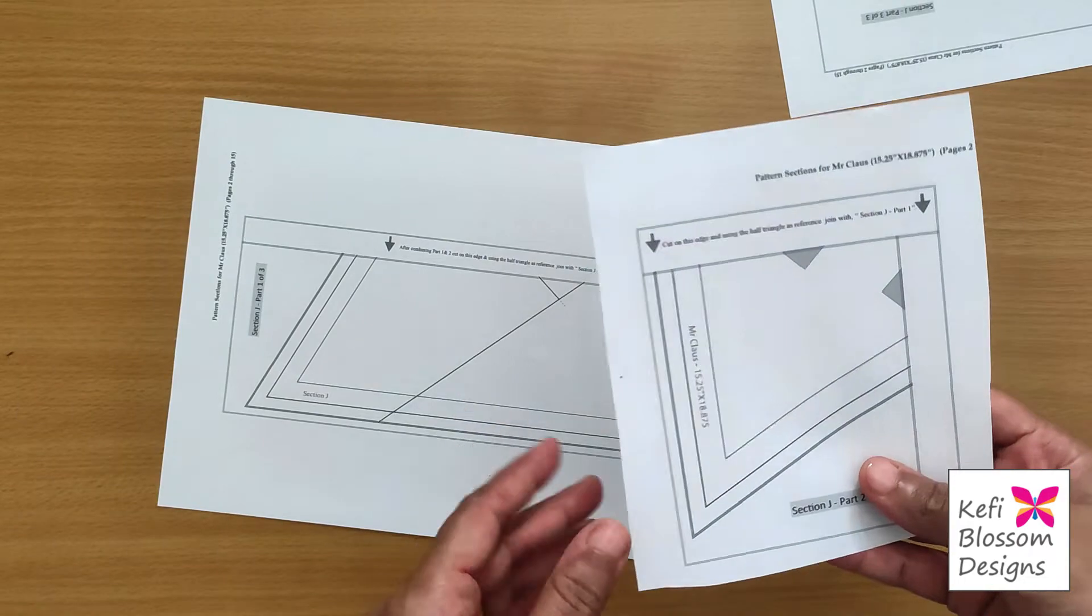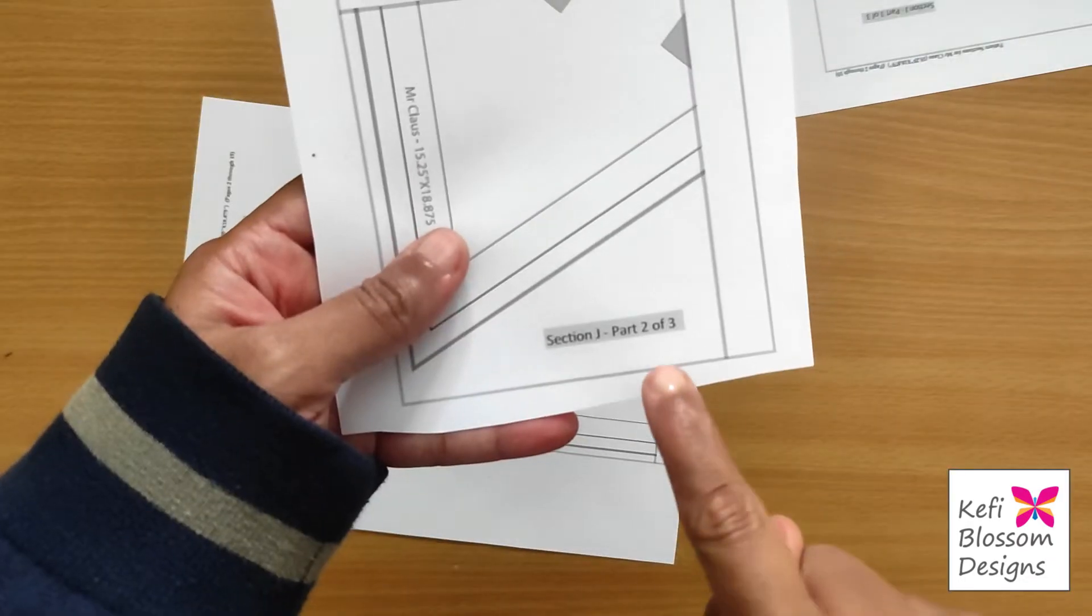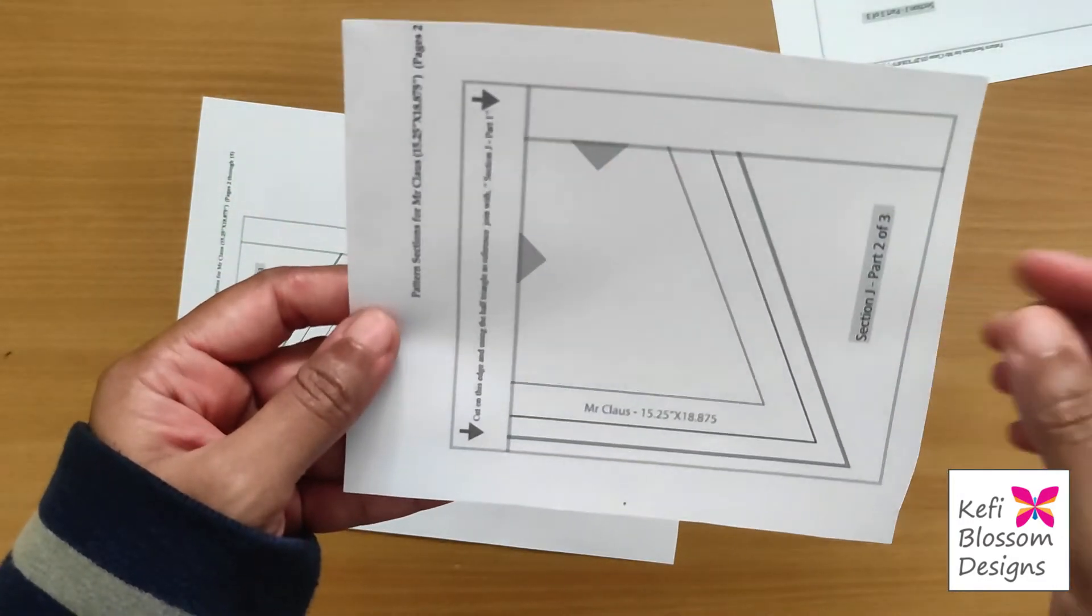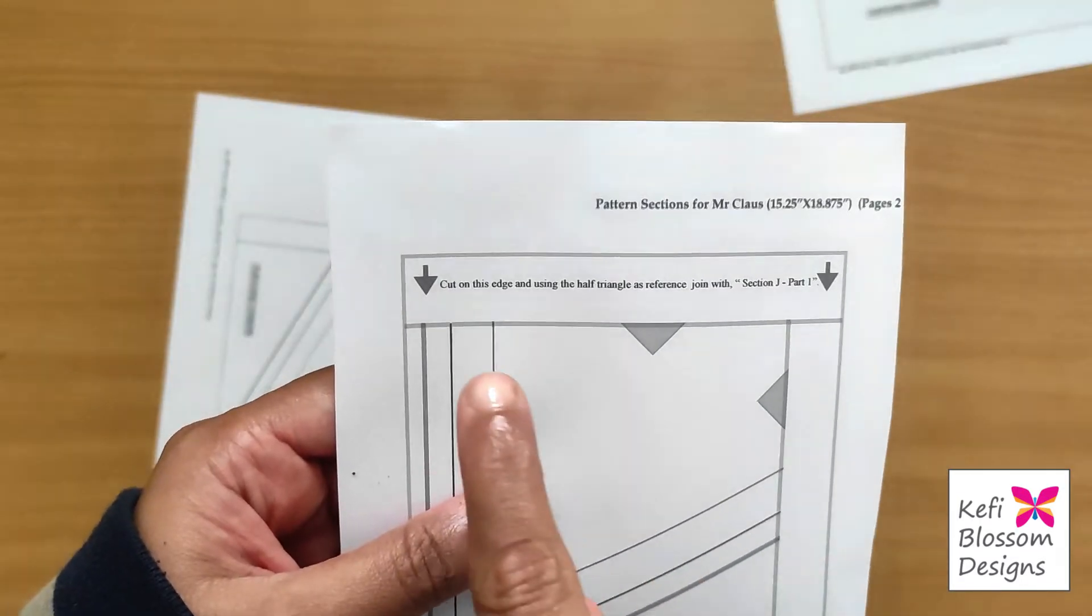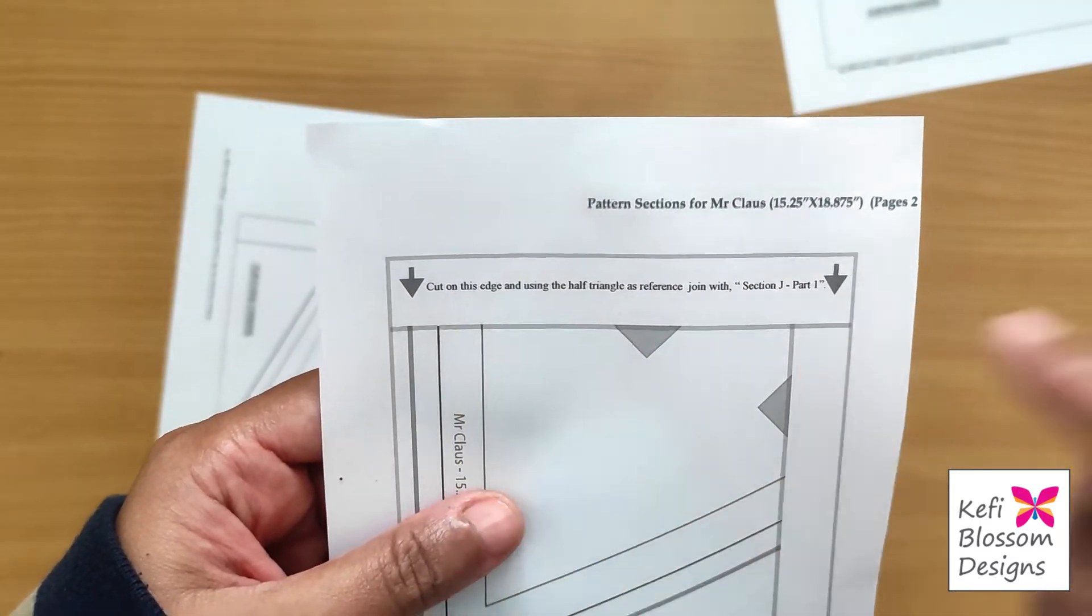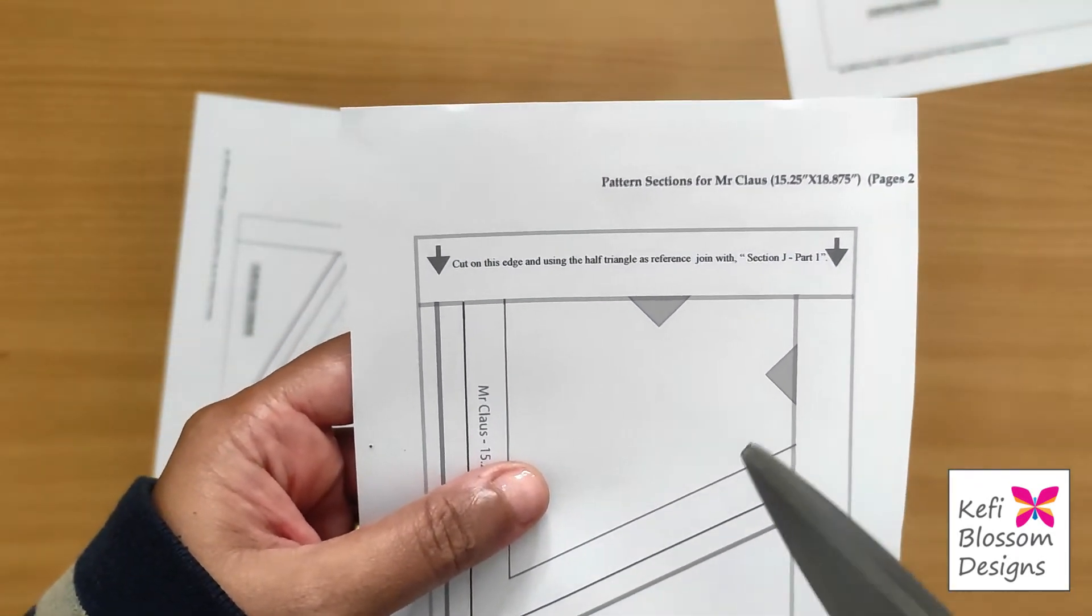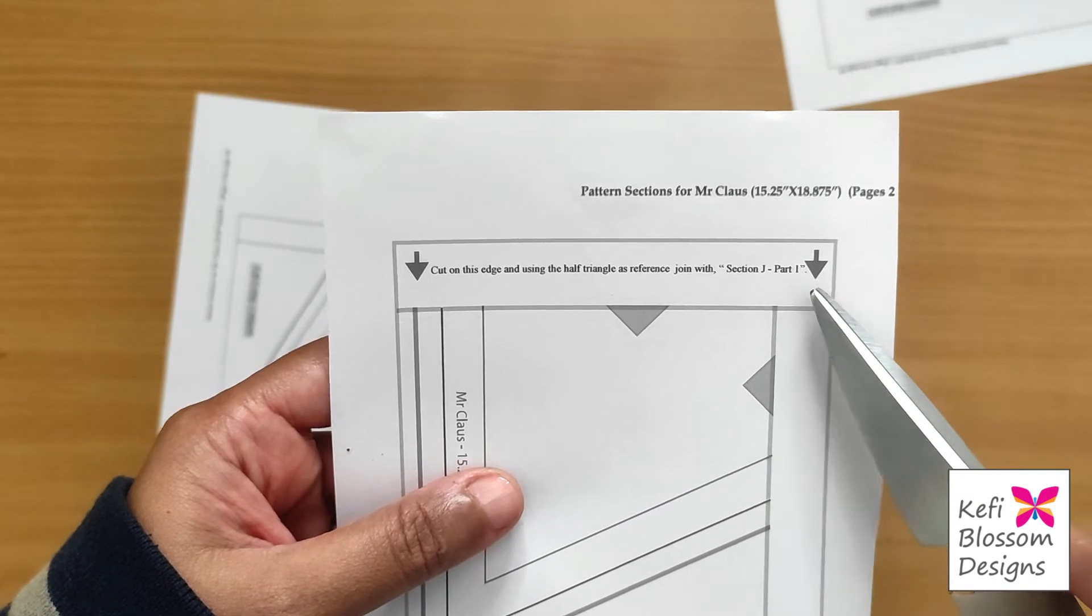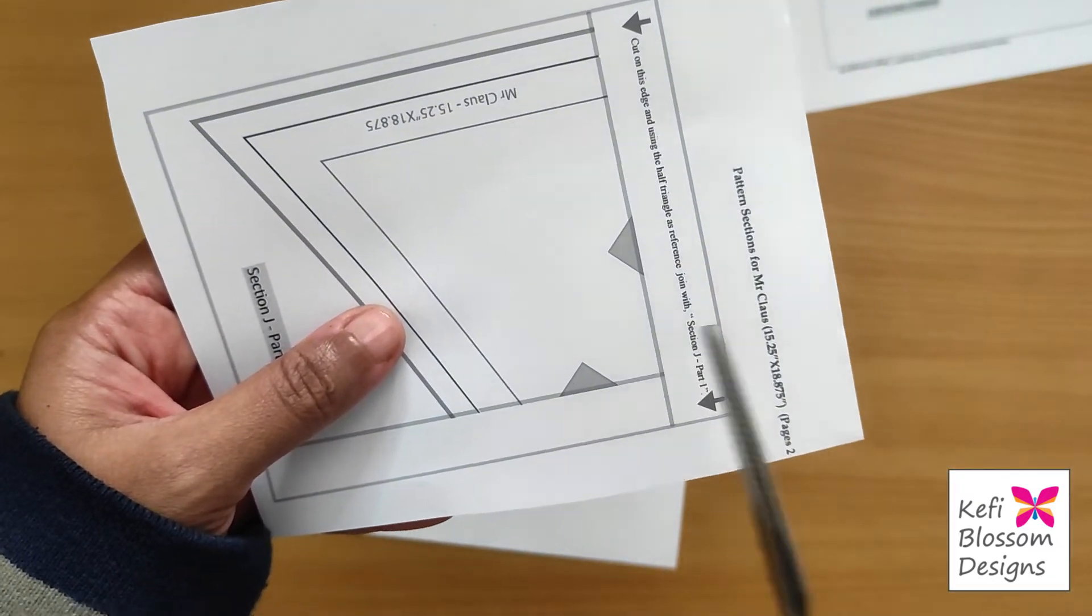Now I'll take part two. Again, I'll cross check the label, which says part two of three, which confirms this is part two. And then I'll read the instructions given on the side, which says to cut on this edge, which means this edge of the line. And then using the triangle as reference, I have to join with part one. So first, I will cut on this edge.